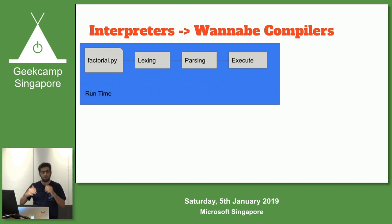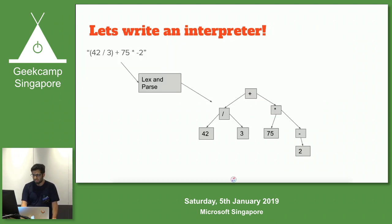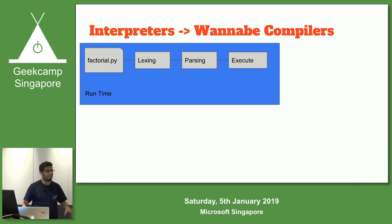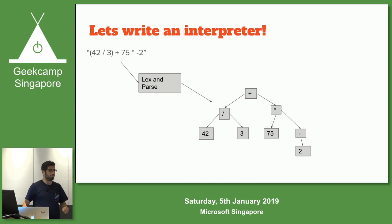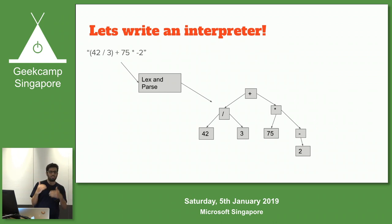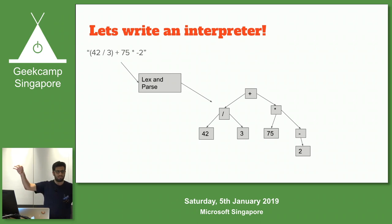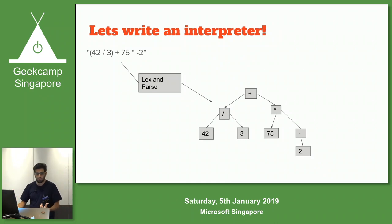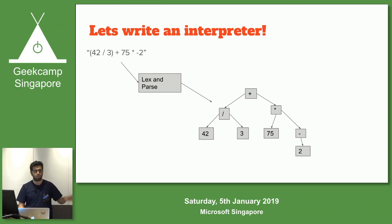An interpreter is very simple. Here I have factorial in Python code. I run this and I get the answer immediately. What's actually happening under the hood? It's very similar to a compiler - it's a wannabe compiler. At runtime, the interpreter will lex and parse your source code and immediately execute it. There's no machine code generation involved. It will execute it in the environment that the Python interpreter is written in.